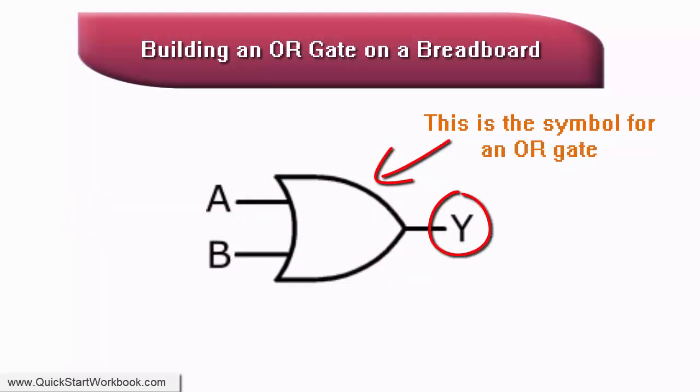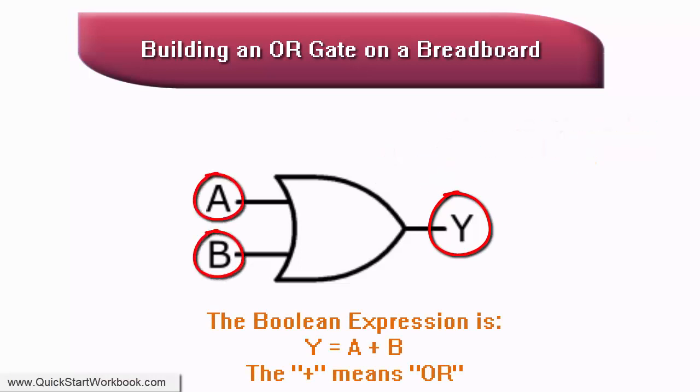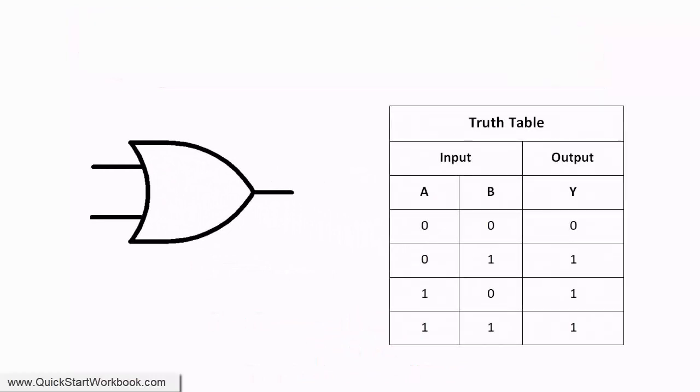In order for the output y to be true, either input a or b needs to be true. The output is also true when both inputs are true. We can see this behavior by looking at the truth table.